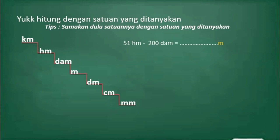Langkah pertama, kita ubah 51 hektometer berapa meter. Dari hektometer ke meter turun sebanyak dua tangga, itu artinya dikalikan dengan seratus. 51 dikalikan dengan seratus hasilnya adalah lima ribu seratus.